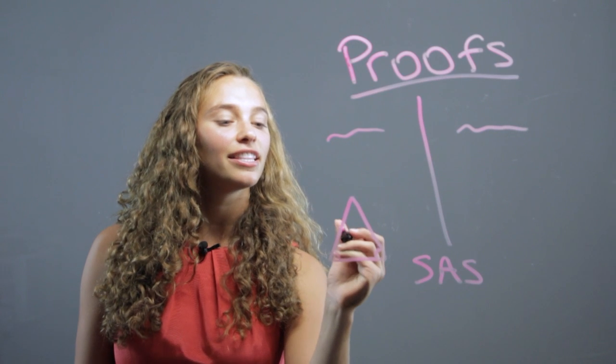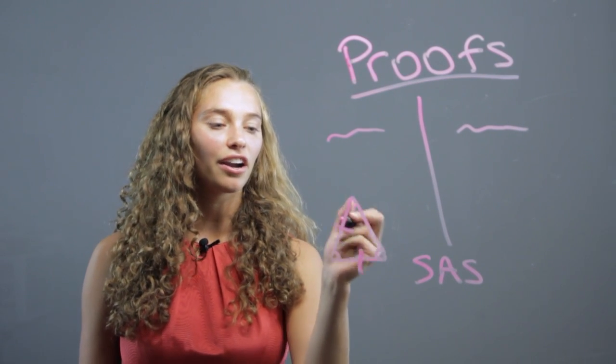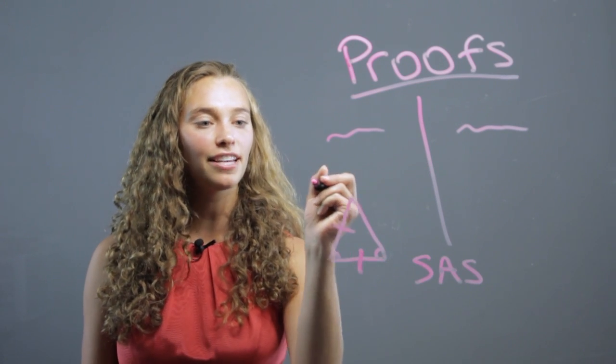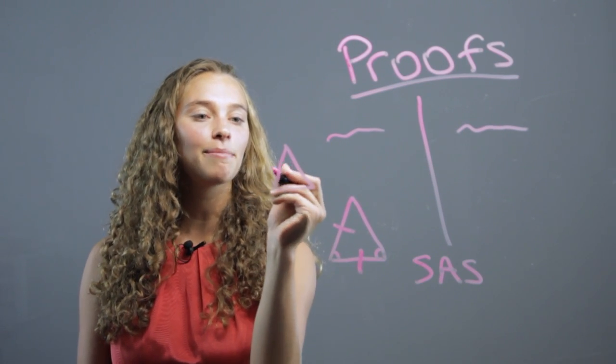That's where the side and then the angle and then the side are the same as perhaps a different triangle. Put a triangle over here, where it's the same relationship.